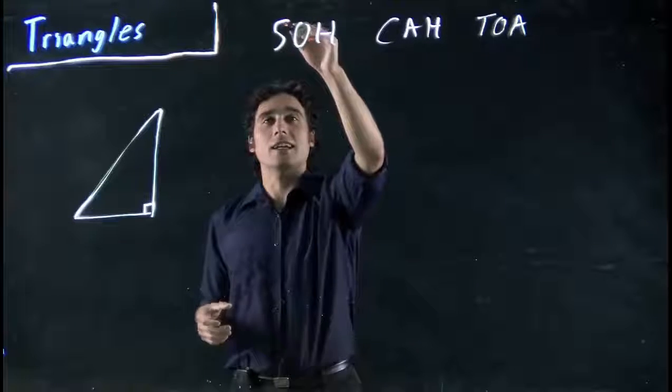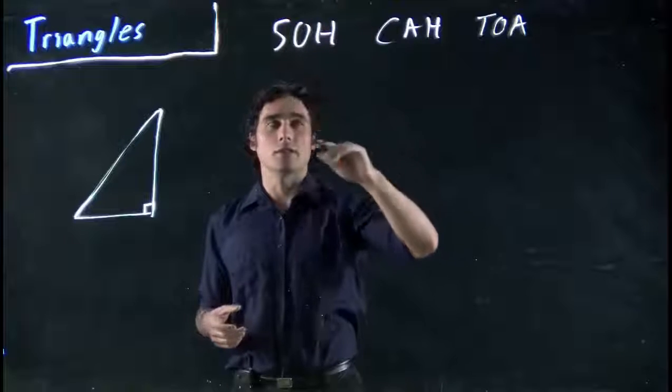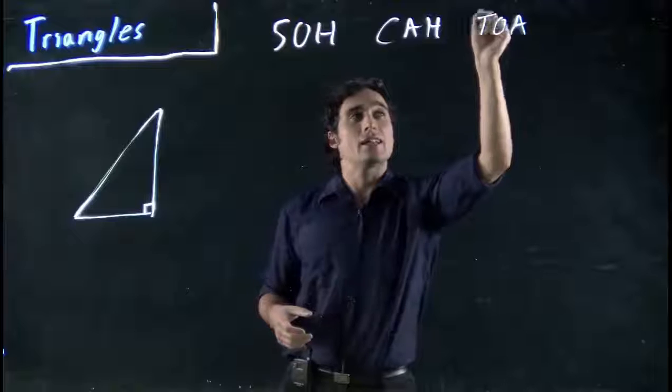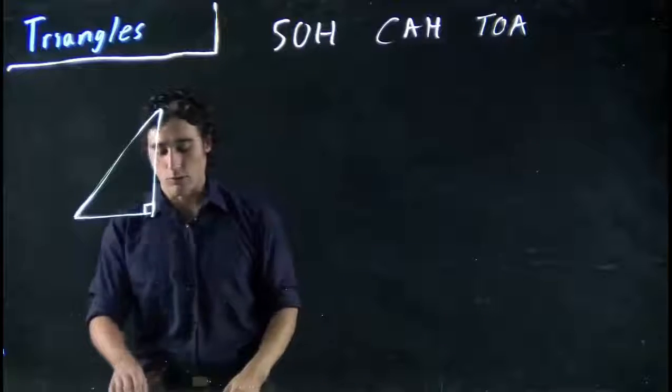So what we have is sine is equal to opposite over hypotenuse. Cos is equal to adjacent over hypotenuse. Tan is opposite over adjacent. So what does that all mean?